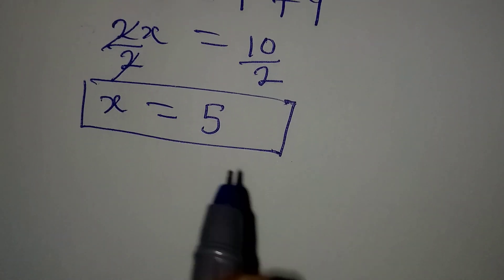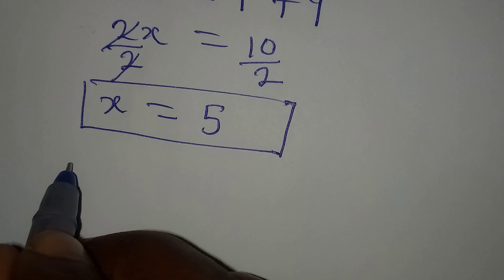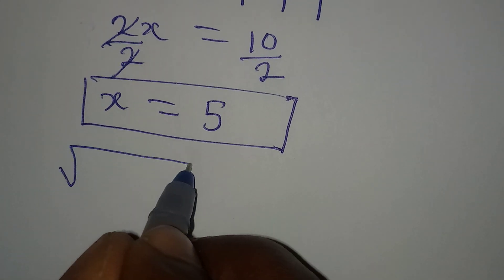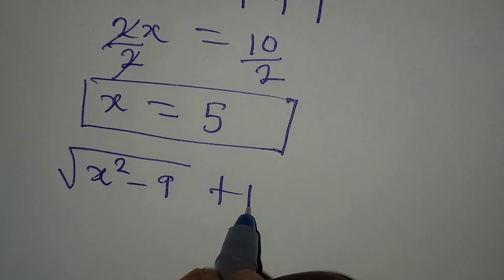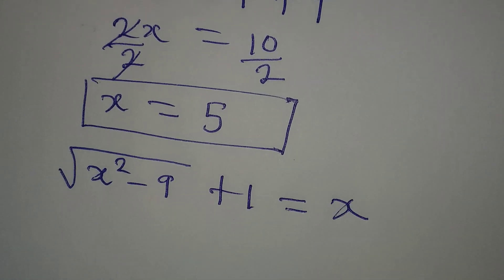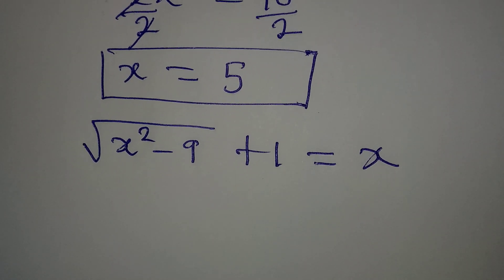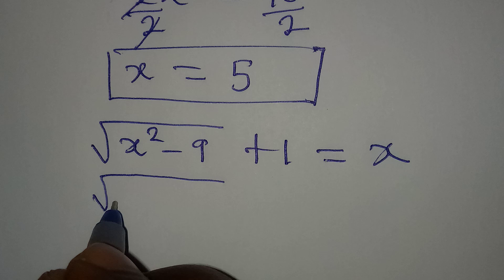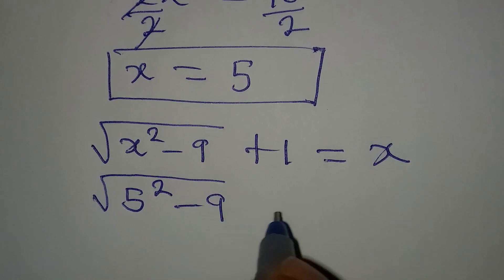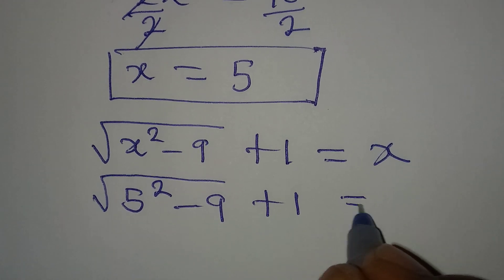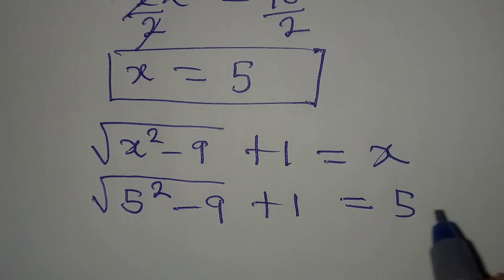Now, let's put this back into the equation. The original equation is square root of x squared minus 9 plus 1 equal to x. Now, let me put in the value of x. So if I do, then I have square root of 5 squared minus 9 plus 1 equal to x. And x is 5.